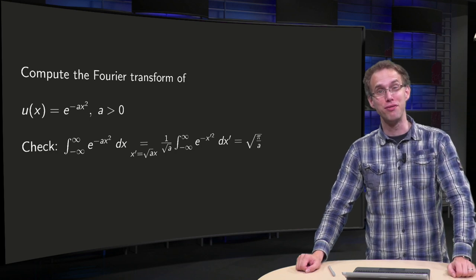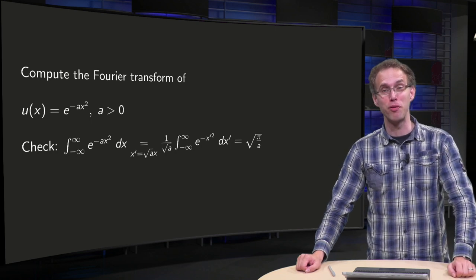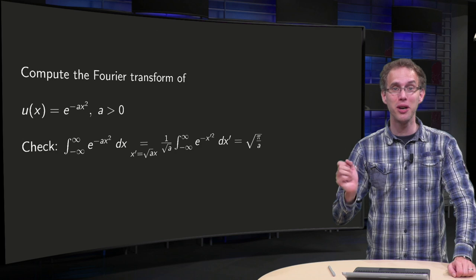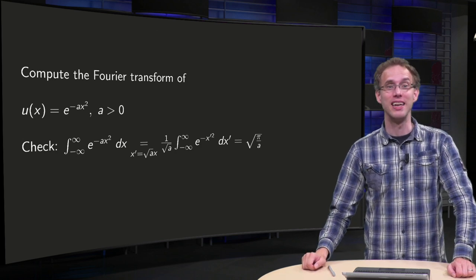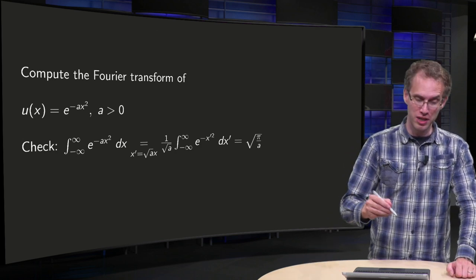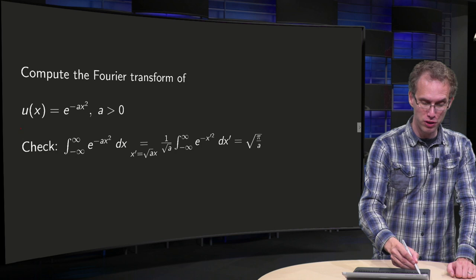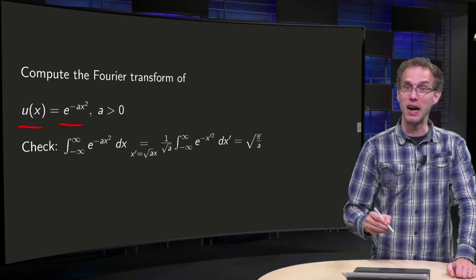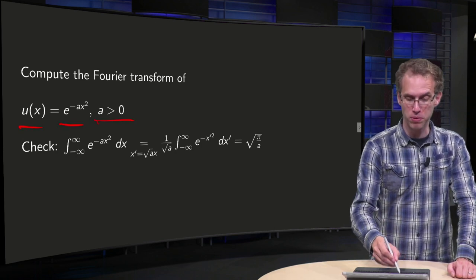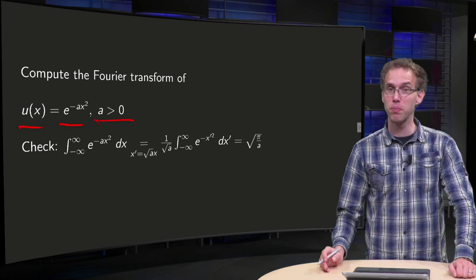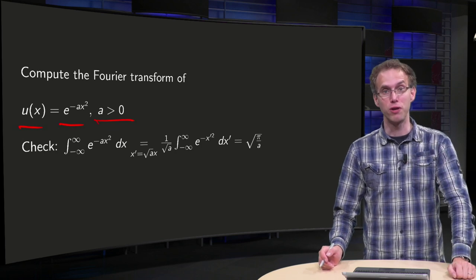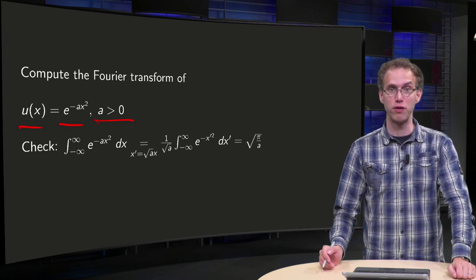What do you get if you take the Fourier transform of a Gaussian? Another Gaussian, as you will learn in this video. Let's take the function u(x) = e^(-ax²), where a is a positive real number, so we have a Gaussian and want to compute the Fourier transform of this function.